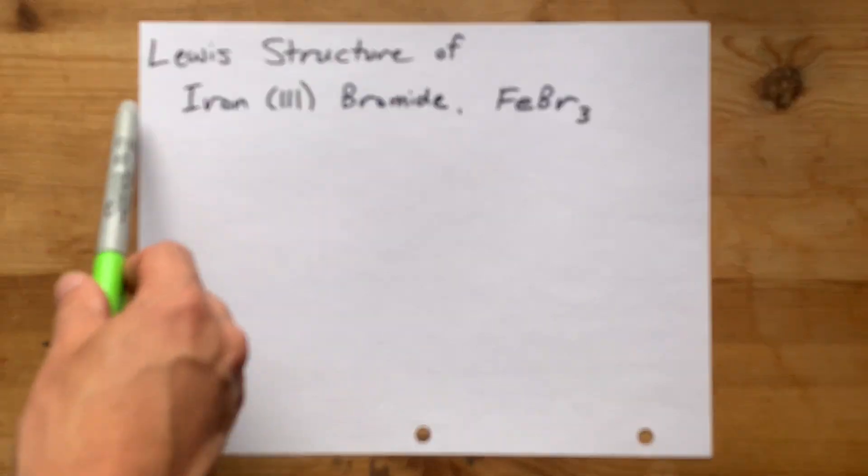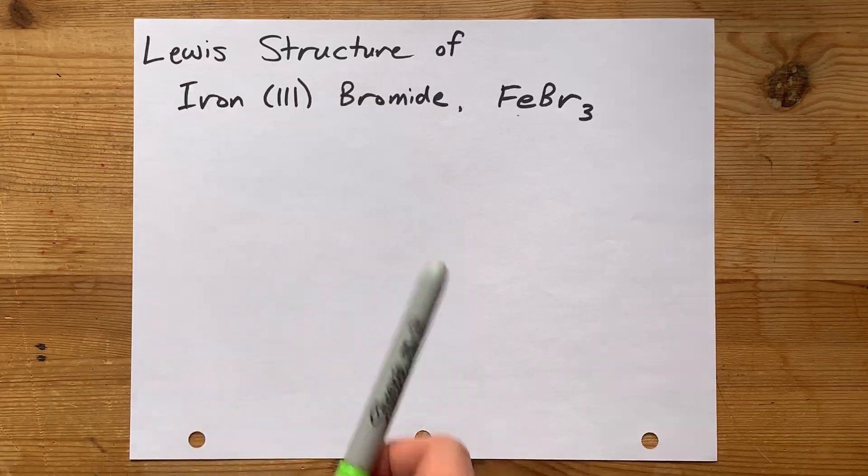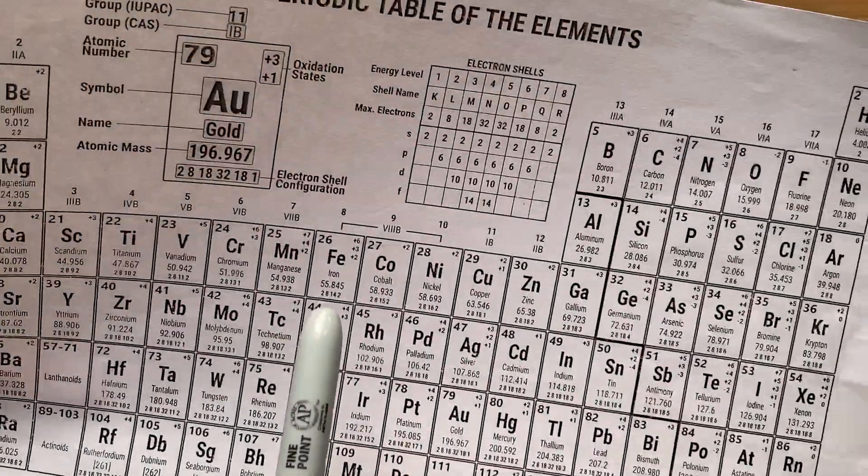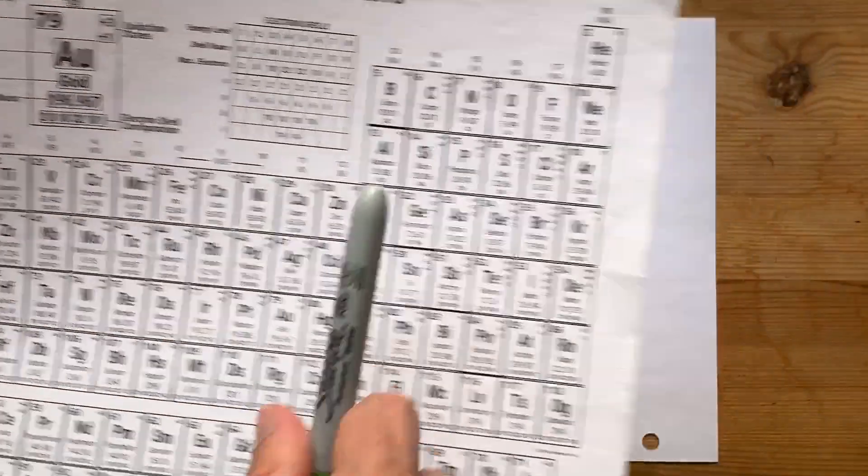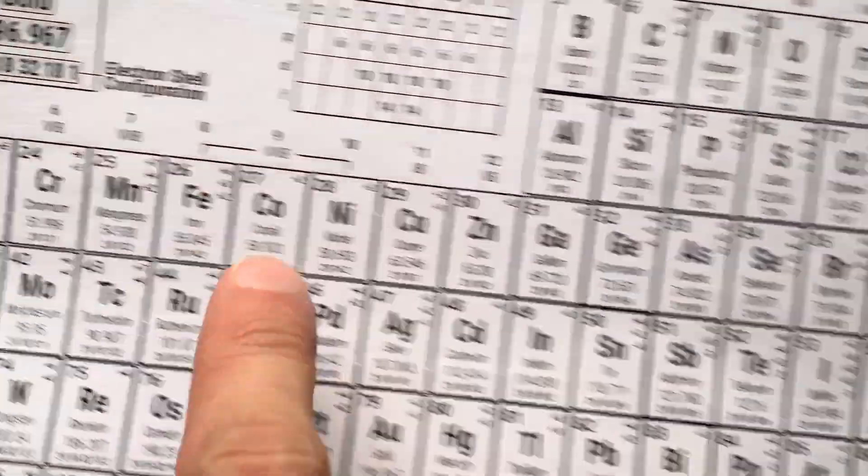The Lewis structure for iron(III) bromide will have an iron atom and several bromines. I'll show you why. Iron is a transition metal from this block of the periodic table. It can actually have more than one possible charge.